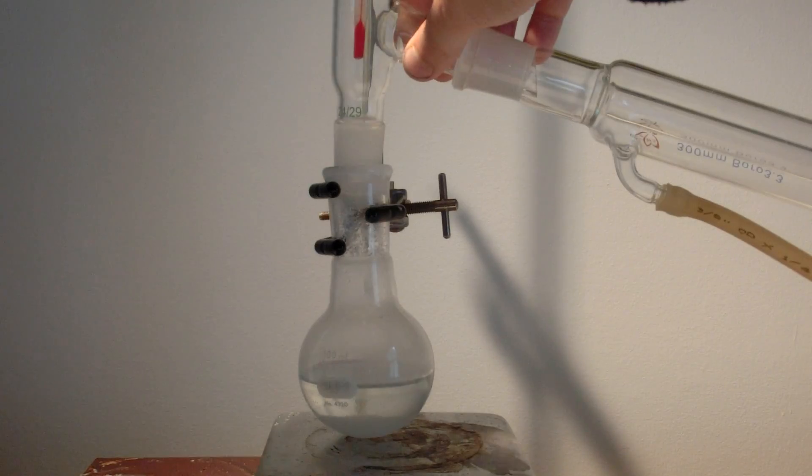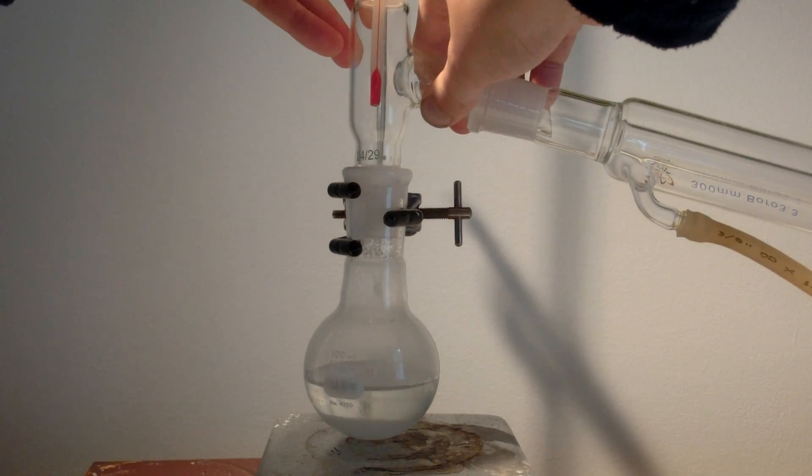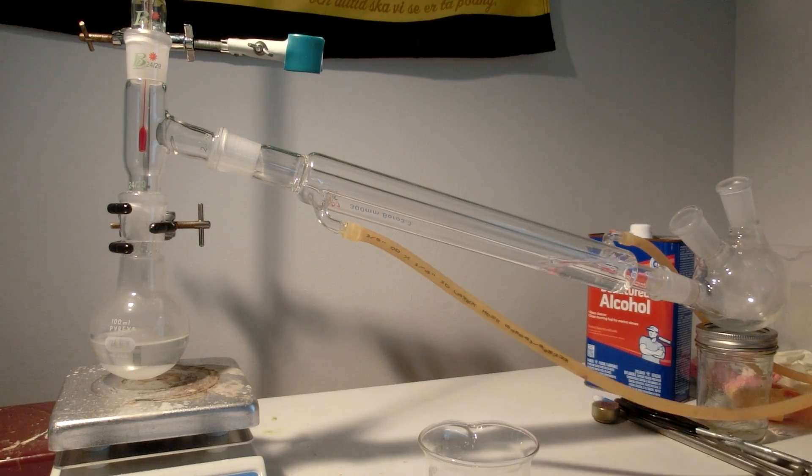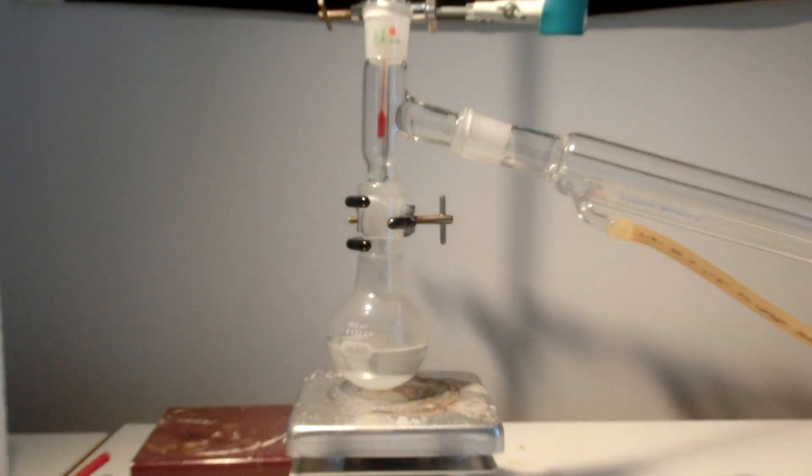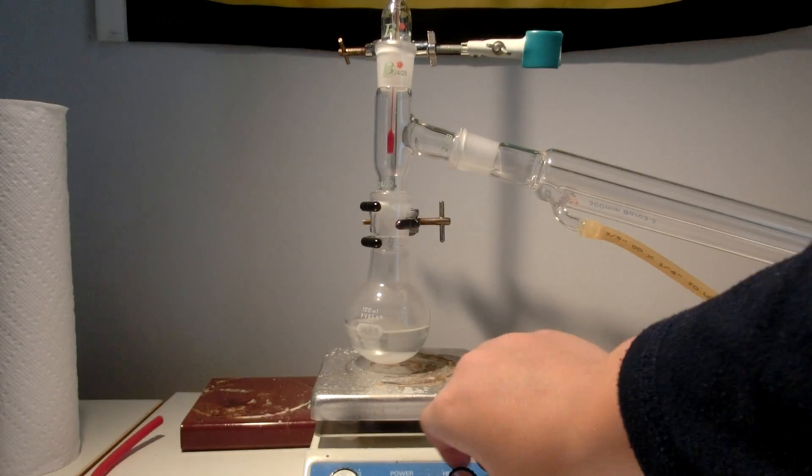The round bottom flask should then be attached to a distillation apparatus. The pump for your condenser should then be started. Next, turn your hot plate onto high heat.